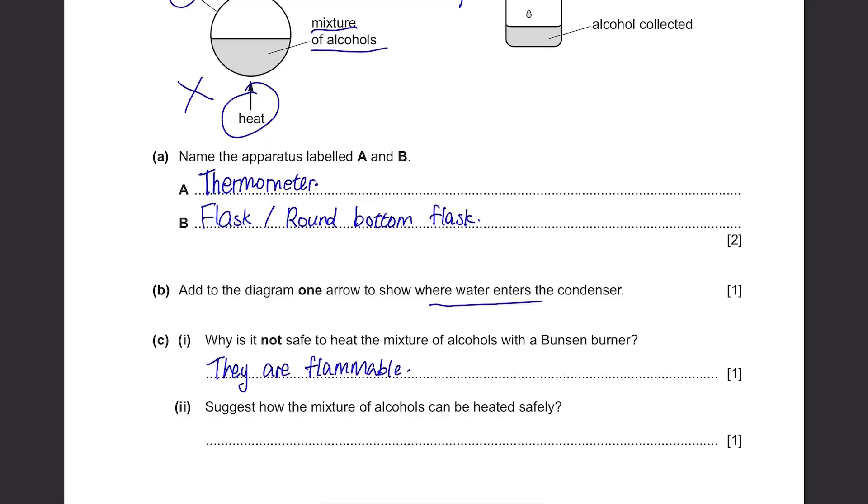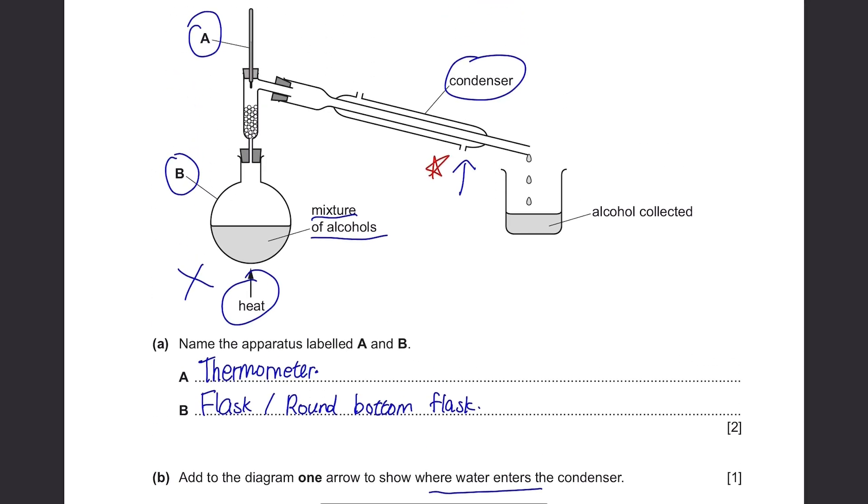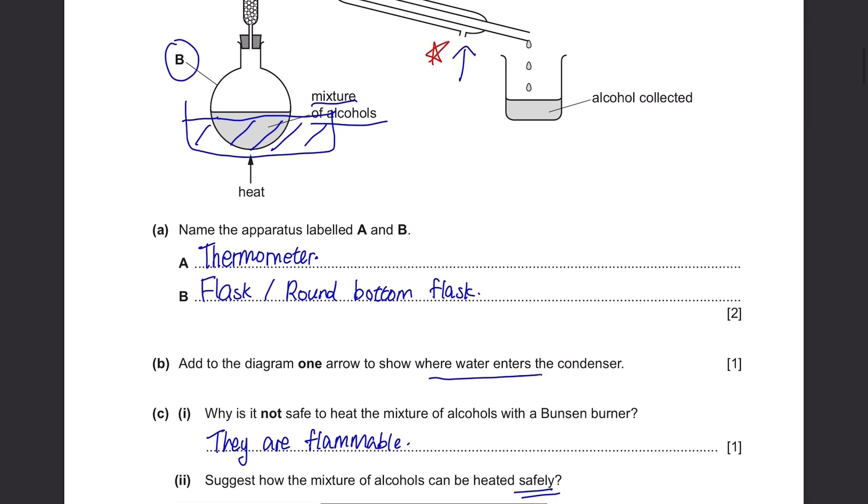The mixture of alcohols can be heated safely. Instead of directly heating this mixture, what we usually do is place it in a water bath. So it's like a container containing water. It prevents exposing the alcohols directly under hot temperature. So you're gonna heat up the water first and then this water is gonna heat up the mixture of alcohols.